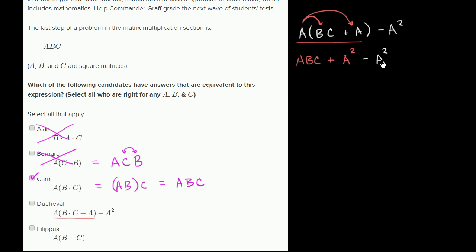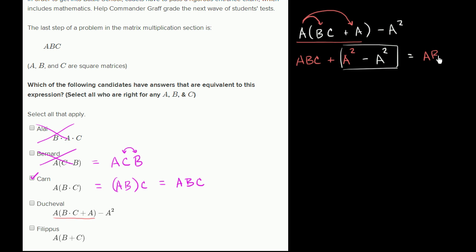Well, these two things are going to cancel out — they're going to end up being the zero matrix. And if you take the zero matrix and add it to ABC, you're just going to end up with ABC. So this one was a little bit tricky, but it actually is equivalent.